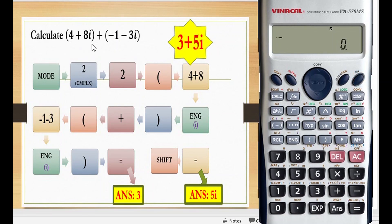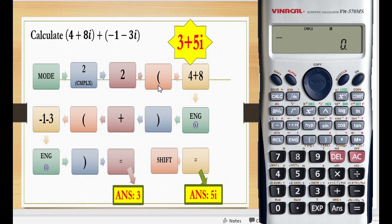Calculate 4 plus 8i plus negative 1 minus 3i. First, press the mode button, then 2 for complex. Press the button 2, then press the open bracket to key in the first number. Key in 4 plus 8i — press ENG for i — so you get 4 plus 8i, then close the bracket and press plus.